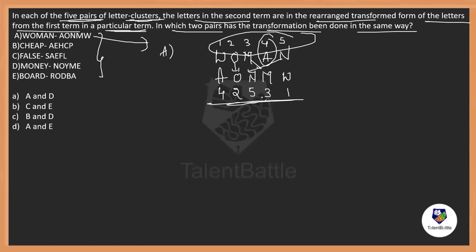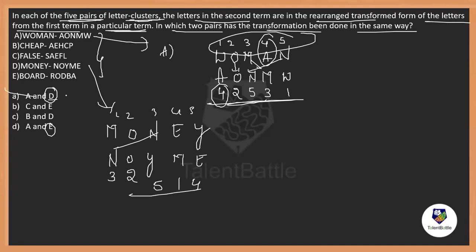A is paired with D. So, let us check with D. MONEY is coded as NOYME. Same thing I'll do. One, two, three, four, five. Actually, A starts with four. So, definitely, this is the wrong one. This rearrangement is not in the same order. Even if I arrange it, it's like two, three, two, five, one, four. Definitely, these both are different. The rearrangement is not same.